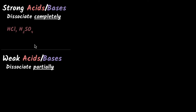For example, if you consider acids like HCl or H₂SO₄ and put them in water, HCl will completely dissociate to give you hydrogen ions and chloride ions. Same would be the case for H₂SO₄ — hydrogen ions and sulfate ions would completely dissociate, and that's why we call them strong acids.